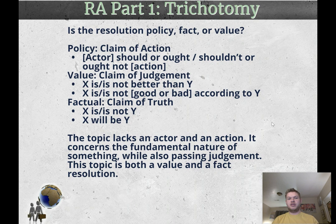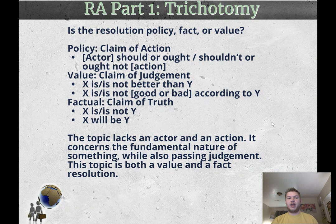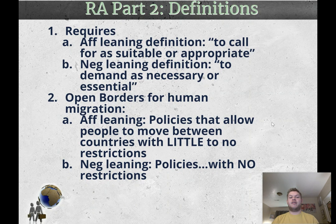Value topics are claims of judgment, phrased as this is better than that or this is good according to that. Fact topics are claims of truth — things like this is something or this is not something. This topic is not a policy topic because it doesn't have an actor, it doesn't have any mention of a group or person or mention of an action. If it were a policy topic, it would have been phrased as a just government ought to open its borders for human migration. It looks to me like a combination of a value and a fact topic, because it is making a judgment about whether something is just, but also talking about the fundamental nature of what justice requires.